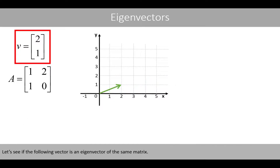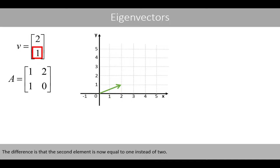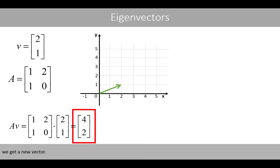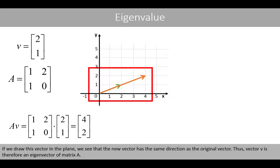Let's see if the following vector is an eigenvector of the same matrix. The difference is that the second element is now equal to 1 instead of 2. If we multiply matrix A by this vector, we get a new vector. If we draw this vector in the plane, we see that the new vector has the same direction as the original vector. Thus, vector V is therefore an eigenvector of matrix A.